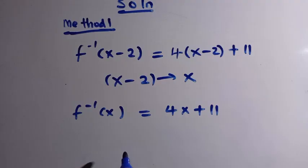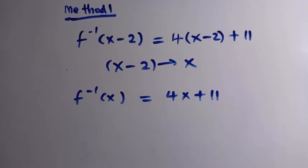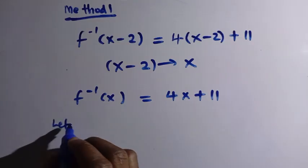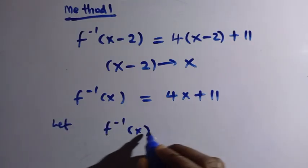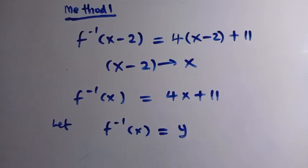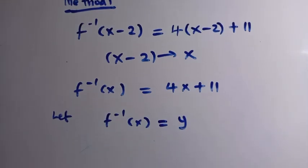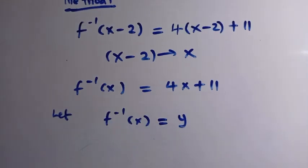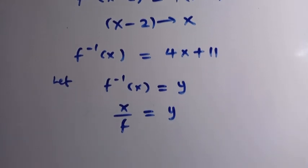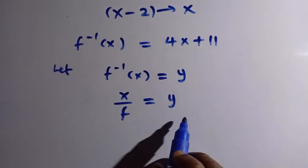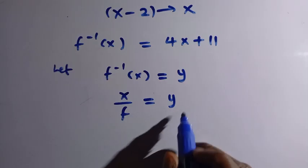Now we need to find f of x from f inverse of x equals 4x plus 11. To do this, we let f inverse of x equal y. By the inverse property, if f inverse of x equals y, then x equals f of y.